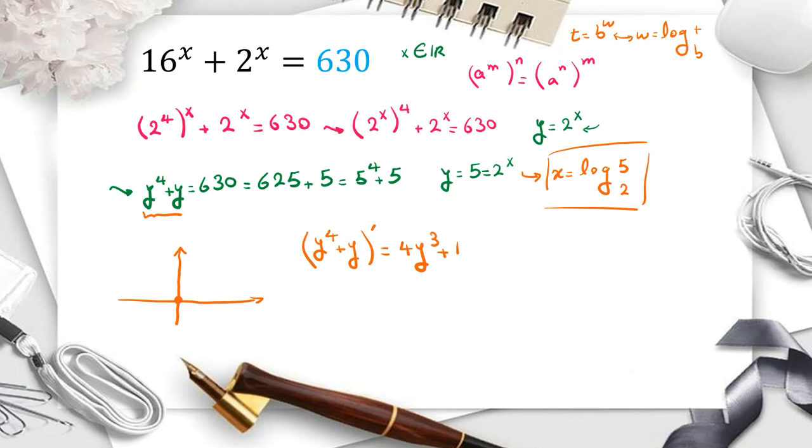Now we know y should be positive, because y is 2 to the x. So because y is positive, we can say this part is greater than 0. So to conclude that y to the 4 plus y in positive, y is increasing.